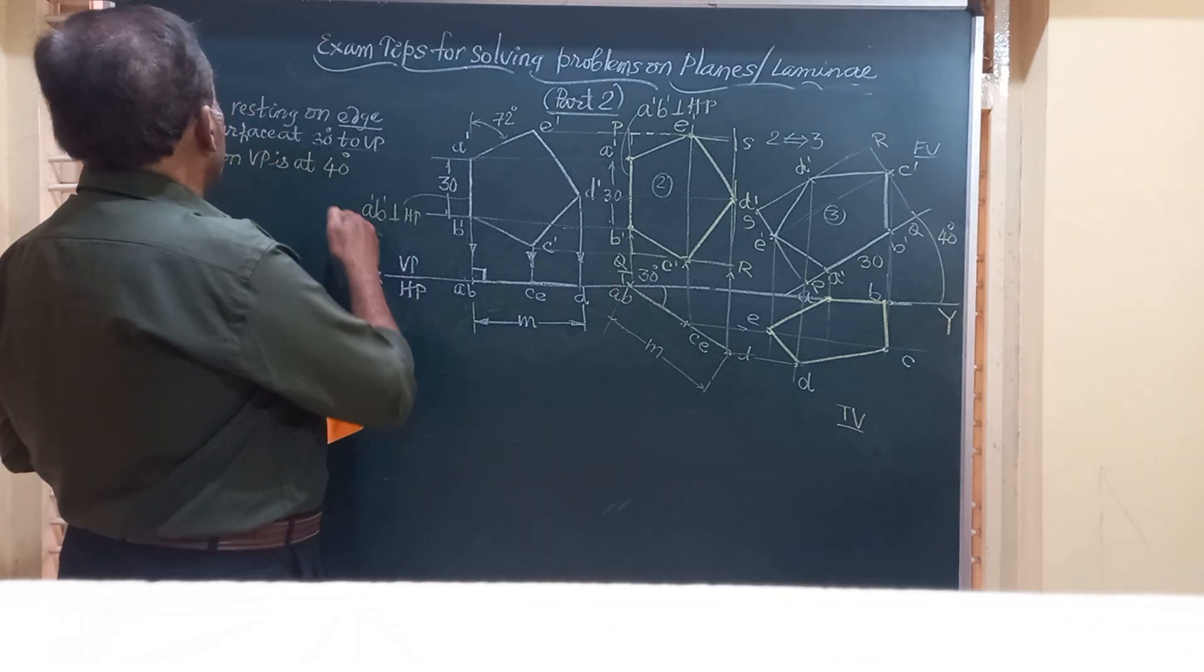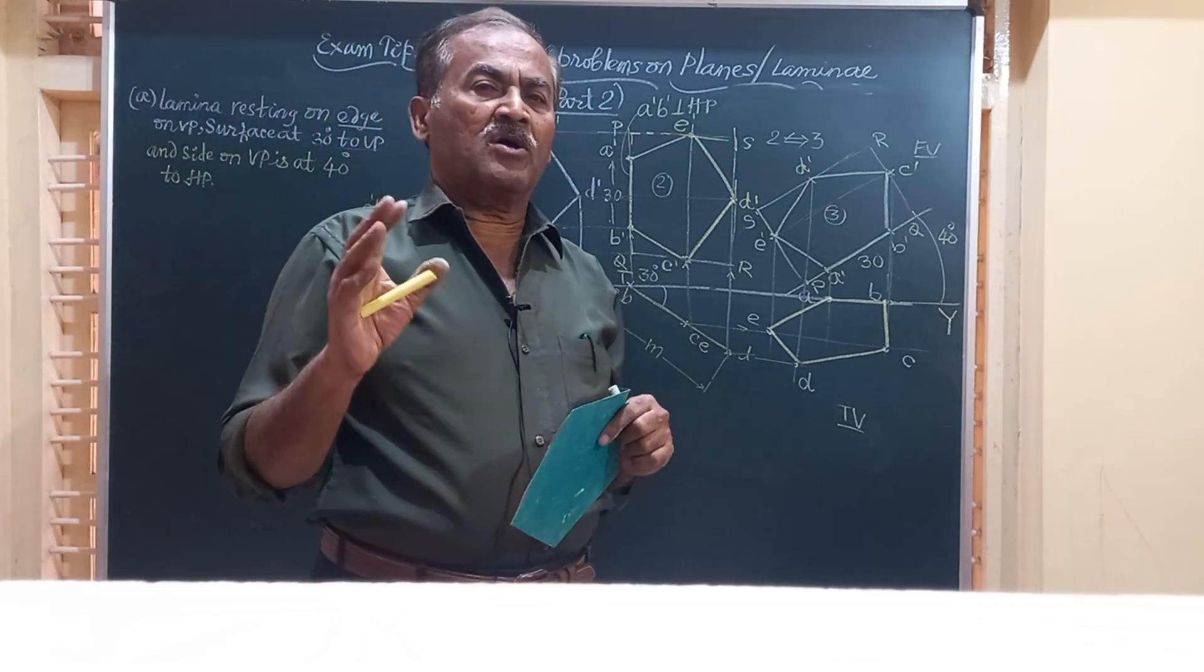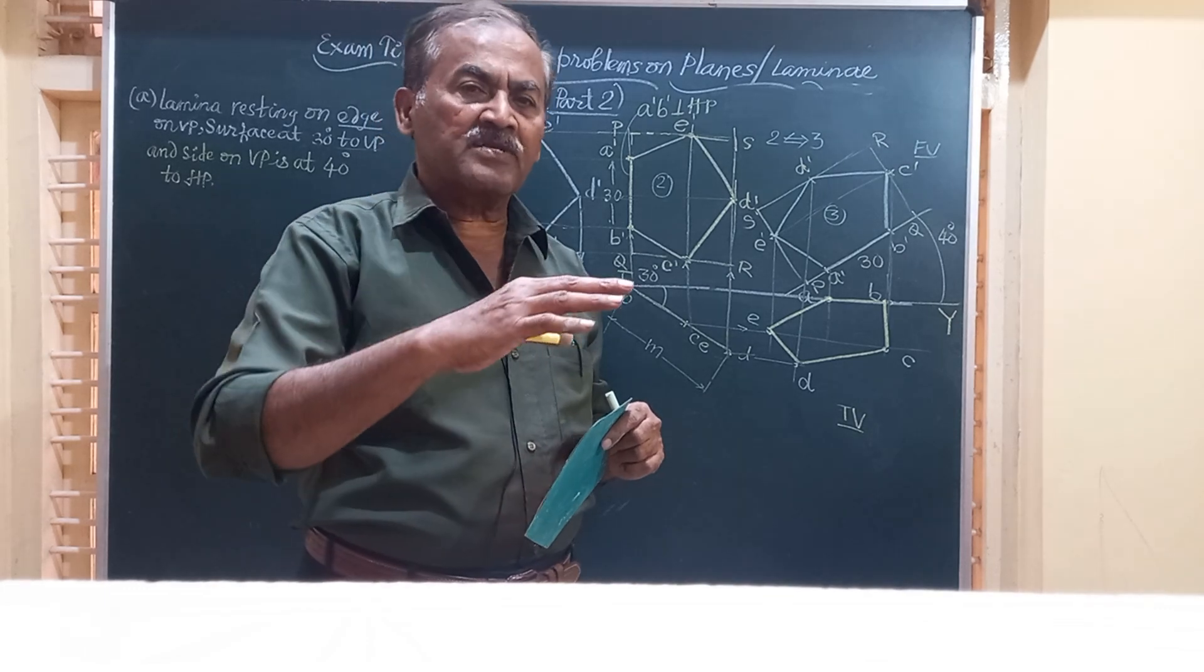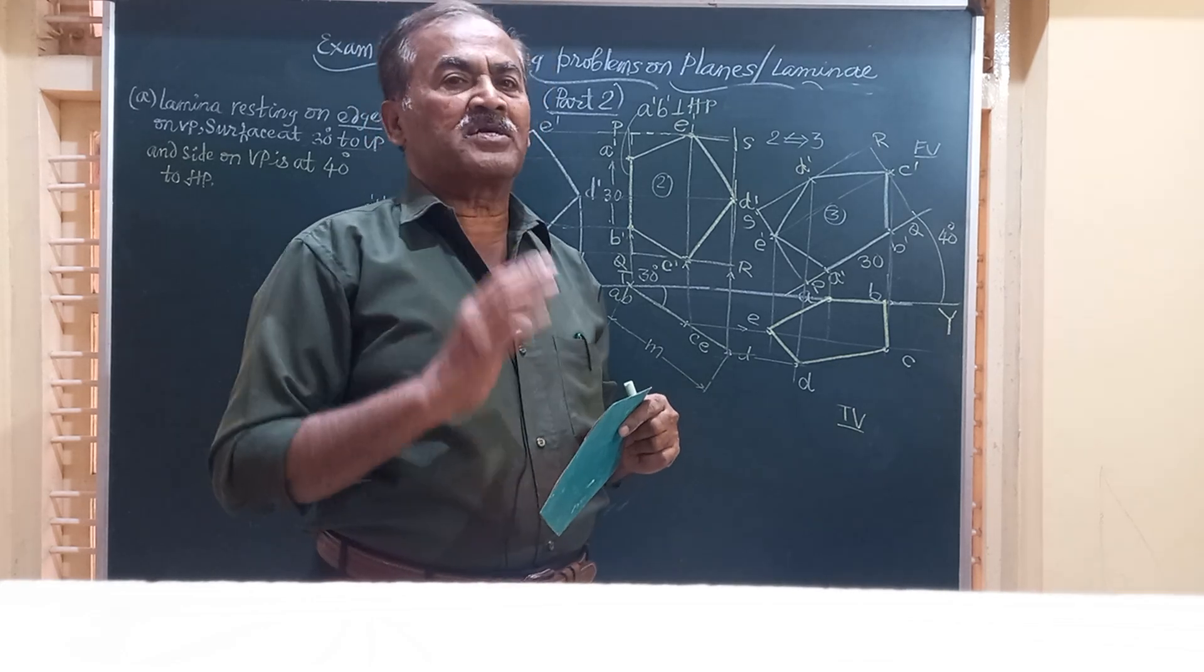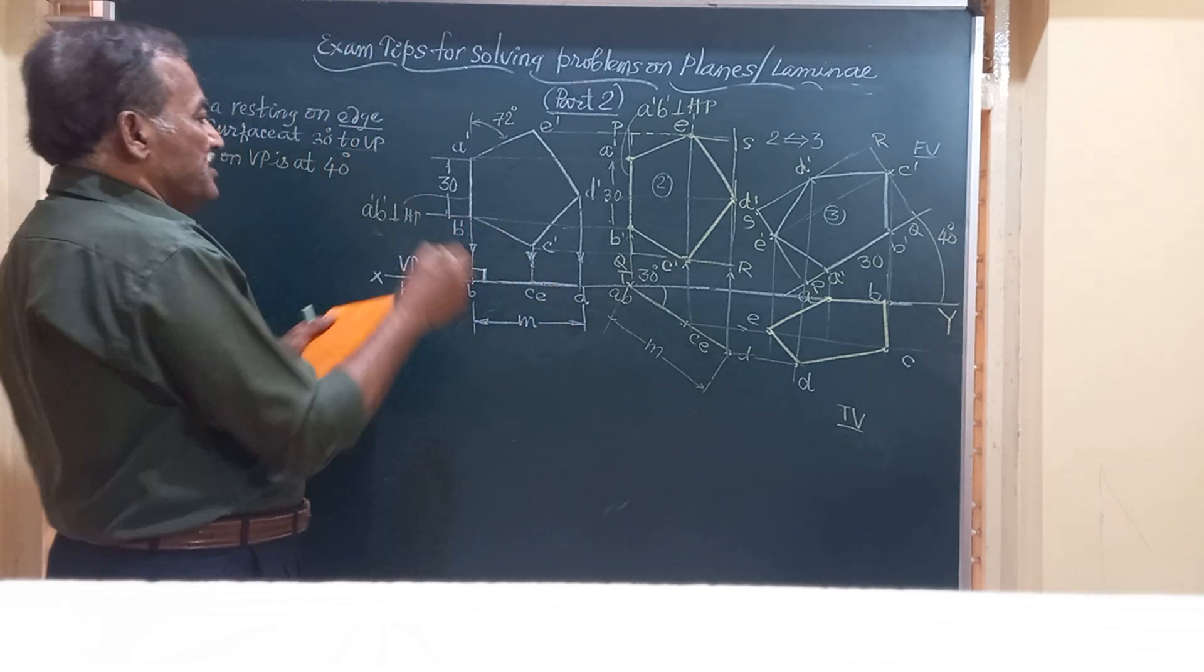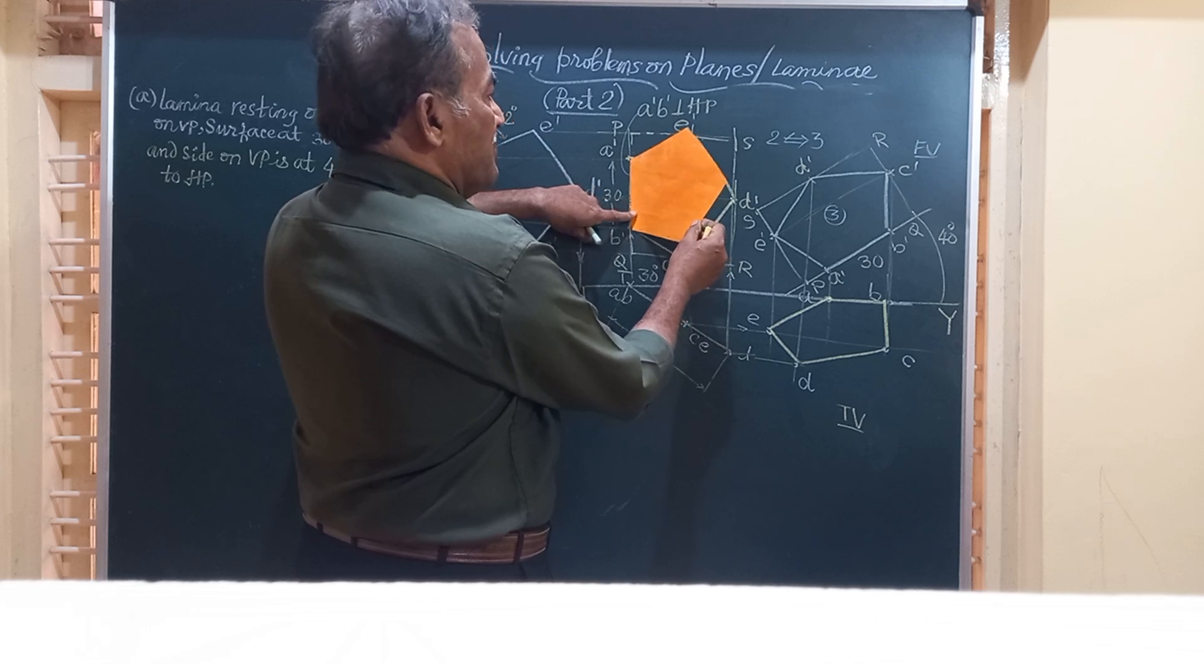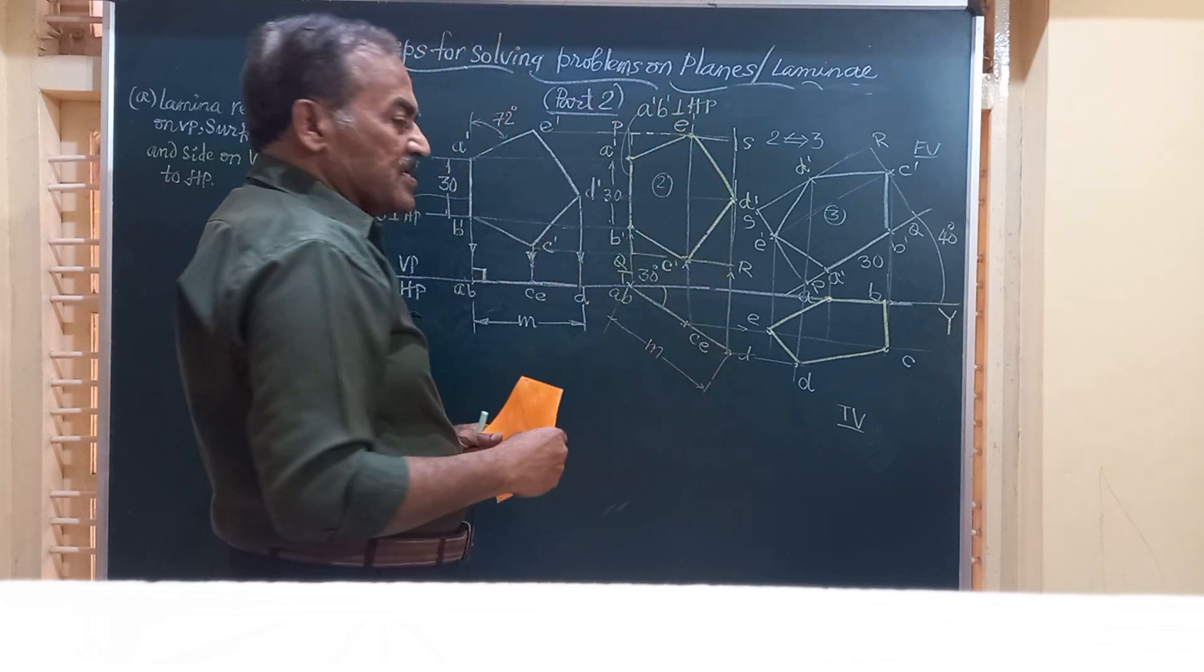Friends, in the next position its surface is inclined at 30 degrees to VP. In all the problems of lamina first you should see the initial position whether it has to rest on edge or on corner. Then the next step is what is the inclination made by the surface with HP or VP. The surface is inclined at 30 degrees to VP and it was like this. Now slightly I am going to rotate like this about that edge on VP such that it is making an angle with VP and that is equal to 30 degree.